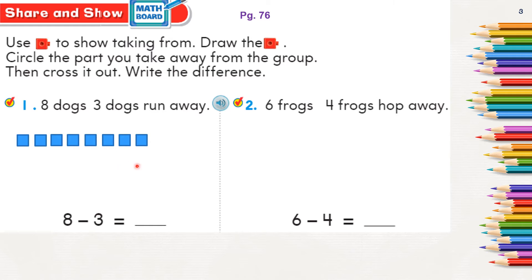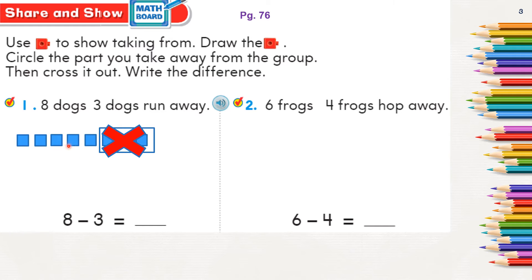Three dogs run away, so draw three cubes in a box and cross them out. Now count how many dogs are remaining: one, two, three, four, five — five dogs are left. Complete the subtraction sentence: eight minus three equals five.